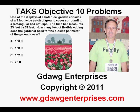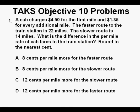TAKS Objective 10 Problems, Problem 1. A cab charges $4.50 for the first mile and $1.35 for every additional mile. The faster route to the train station is 22 miles. The slower route is 14 miles. What is the difference in the per mile rate of cab fares to the train station? Round to the nearest cent.